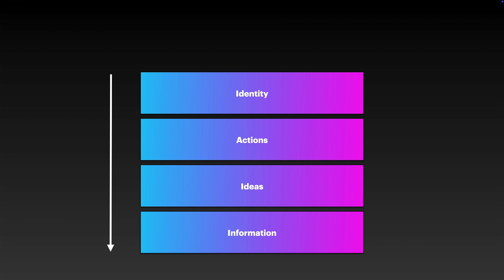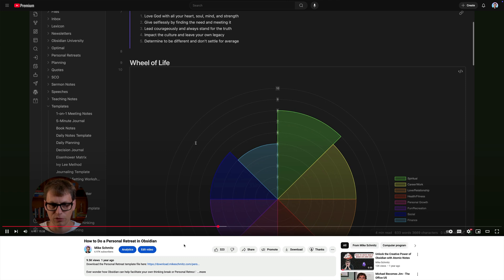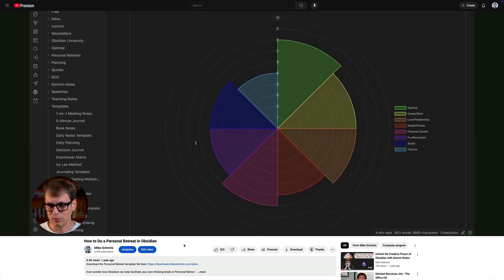Once you've made the switch from the default life to the intentional life, it doesn't just stay that way — you can't set it and forget it, you've got to fight to keep it. That's why a regular reflection practice is so valuable. You need to consistently be asking yourself: what's working, what's broken, and how do I fix it? Journaling is a big part of this for me, but the thing that really makes it stick is my quarterly personal retreat. I walked through the whole process and share my Obsidian template in another video, so go check that out if you want to know more.